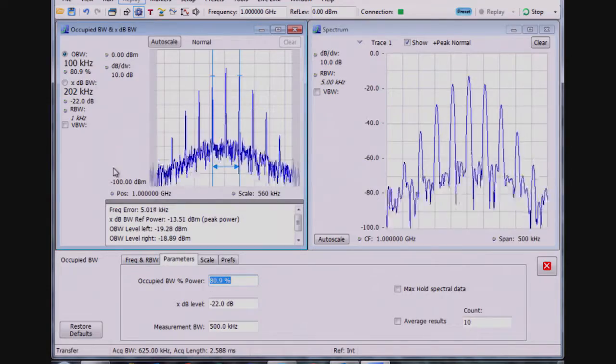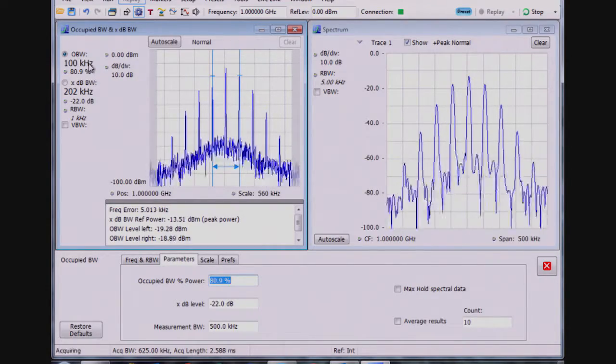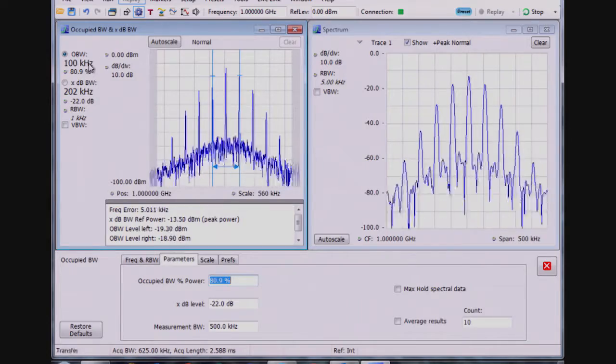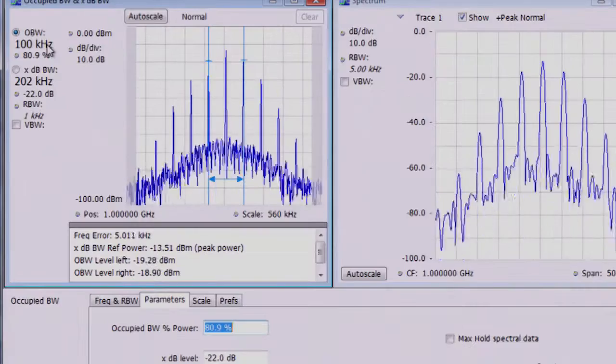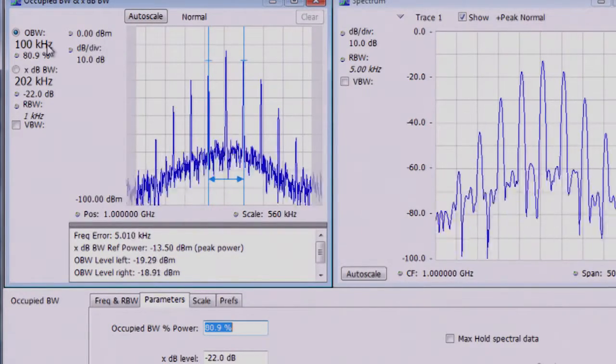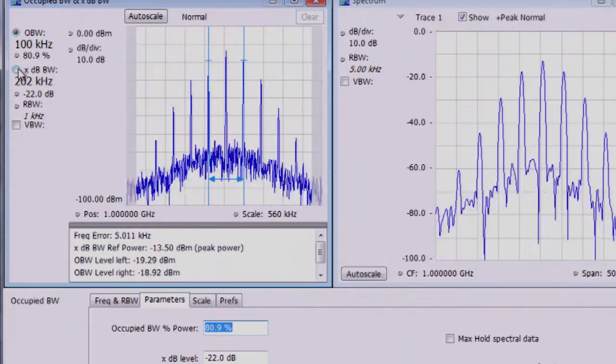It happens to be 100 kilohertz because I have an FM signal that I'm using from my Tektronix TSG that is 50 kilohertz deviation. So I see 80 dB in this nice, convenient number of 100 kilohertz.